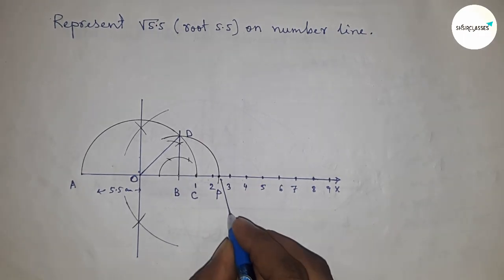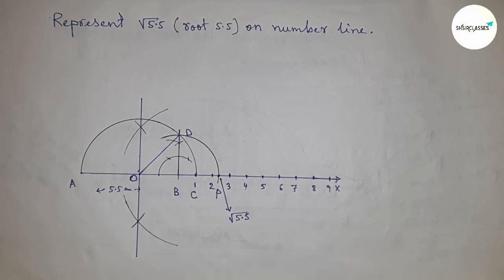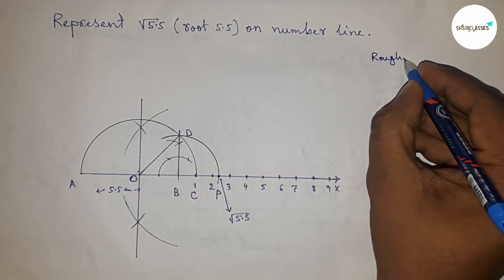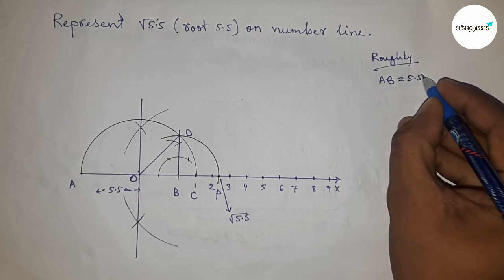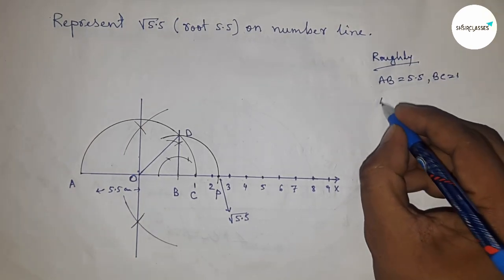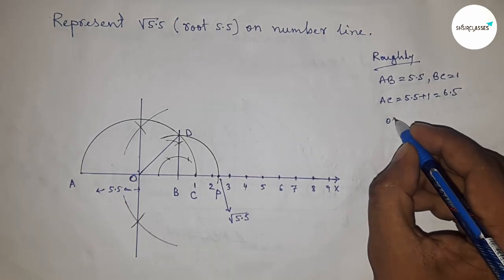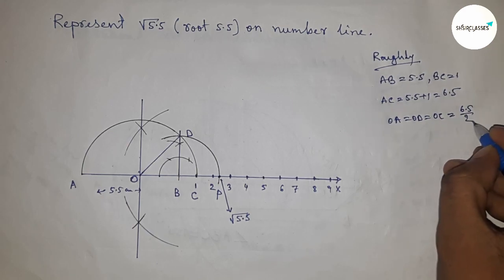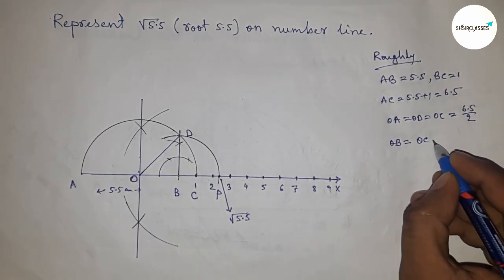This is the representation of root 5.5 on the number line. Now roughly discussing the calculation: given AB equal to 5.5 cm and BC equal to 1 cm, so AC equals 5.5 plus 1 equal to 6.5 cm. Next, OA, OD, and OC equal to 6.5 divided by 2.